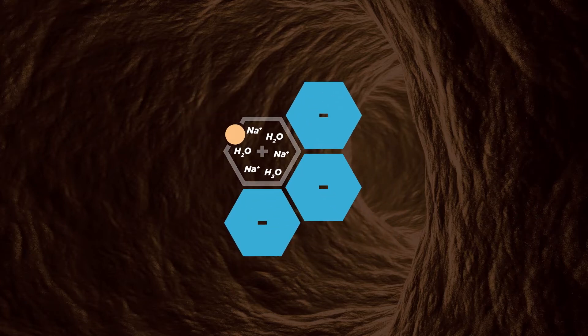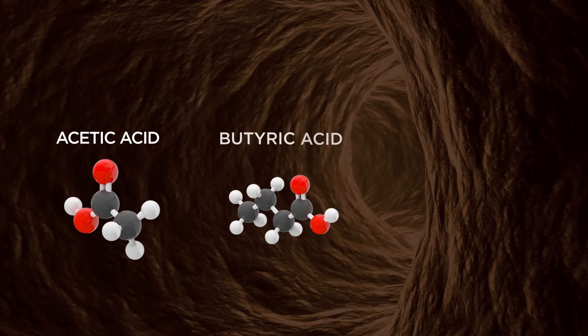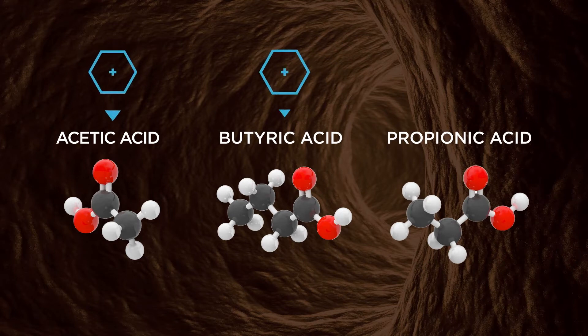As was stated before, feed or carbohydrates are broken down, fermented, into three primary volatile fatty acids – acetic, butyric, and propionic. Gram-positive bacteria tend to produce a higher proportion of acetic and butyric acids, while gram-negative bacteria produce a greater proportion of propionic acid.